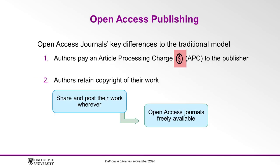In contrast, open access journals perform the same steps to publication but with key differences in certain details. The authors pay an article processing charge, or APC — a fee to the publisher after a work has been accepted for publication — and the authors often retain copyright of their work and may share it and post it wherever they wish.